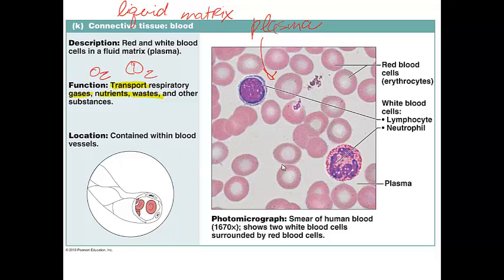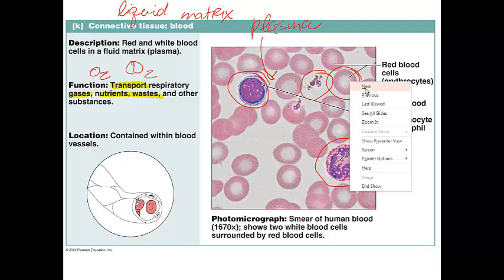The cells — which are one of the major components of connective tissue — can be things like a neutrophil or a lymphocyte, or even cell fragments like platelets, and of course the erythrocytes, or red blood cells.